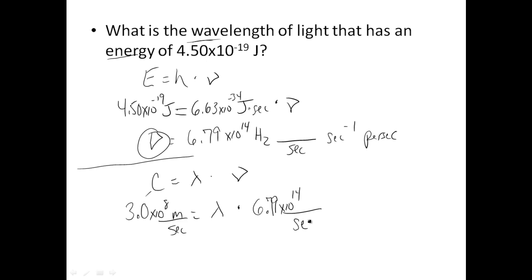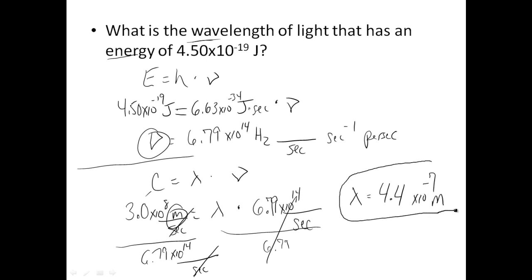When you write it in an equation, write it with a line, seconds on the bottom, so you can see them cancel. In any case, get wavelength alone, divide both sides by the 6.79 number, 6.79 times 10 to the 14th over seconds. You see the over second cancel, and you're left with meters, which makes sense because we're dealing with wavelength. So, wavelength of this problem is going to come out to about 4.4 times 10 to the negative 7th meters.